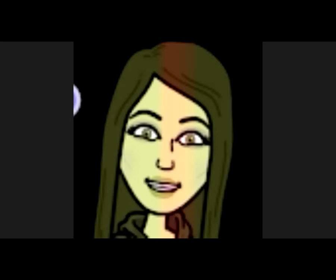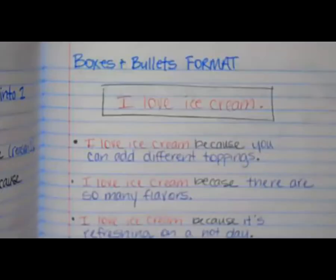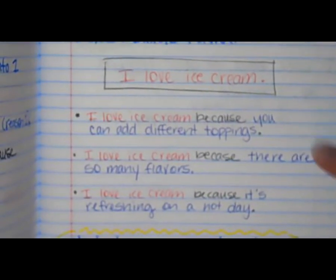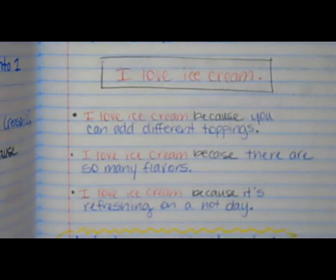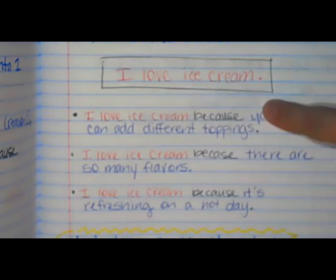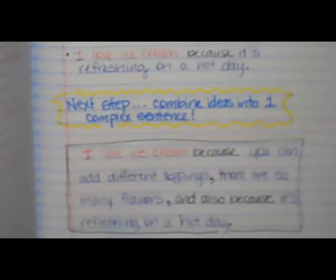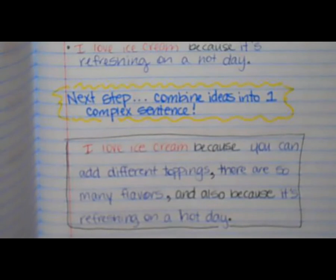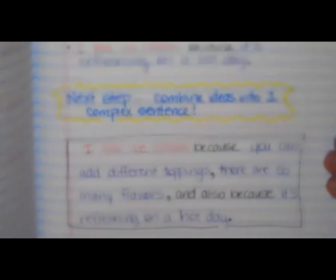The last time that we got together, we made sure that we used our claim, which is 'I love ice cream.' And then we added our reasons: because you can add different toppings, there are so many flavors, and it's refreshing on a hot day. From there, we decided that repeating 'I love ice cream because' again and again wasn't ideal, so we decided to make a complex sentence where we combined all three of those ideas into one.